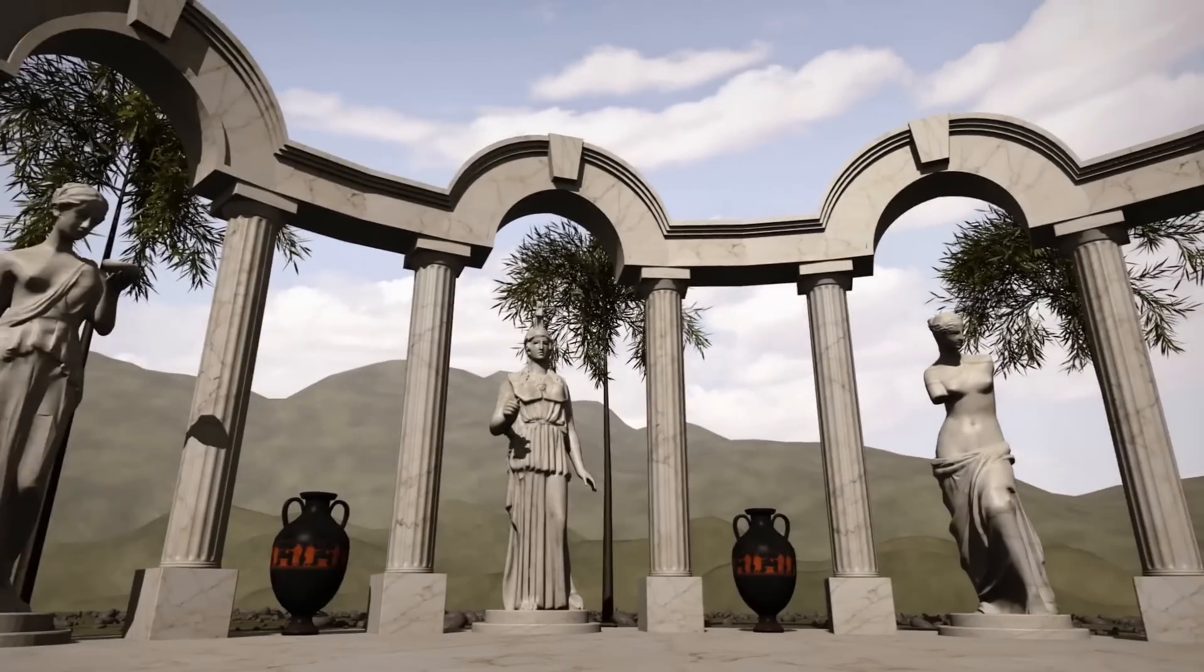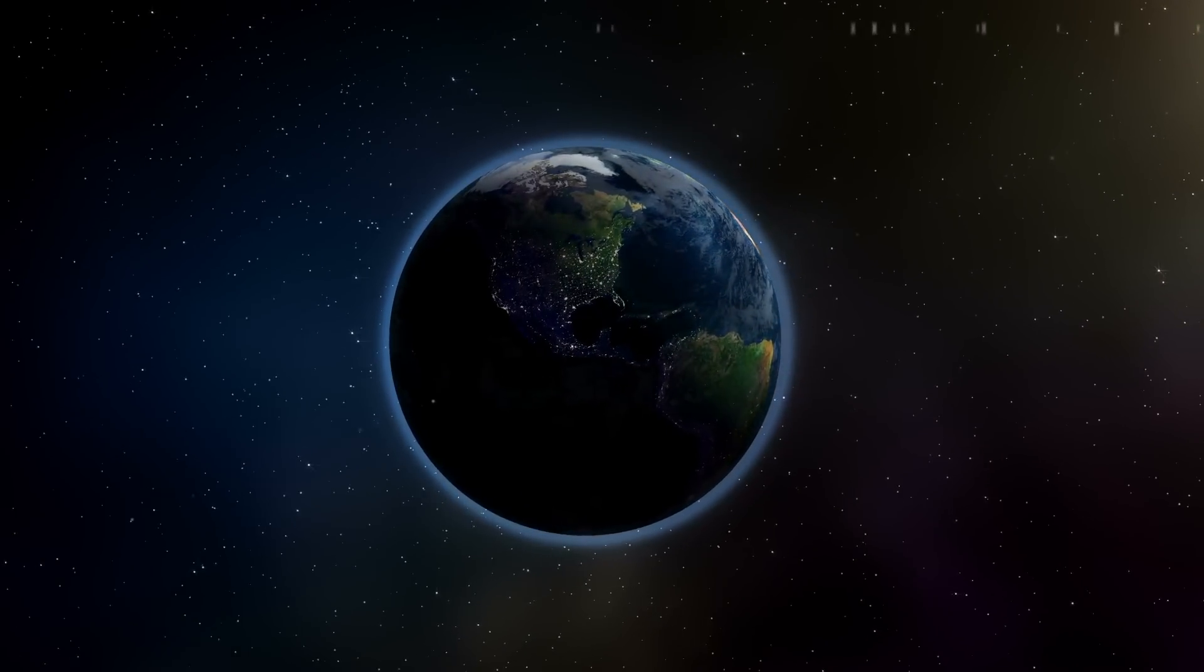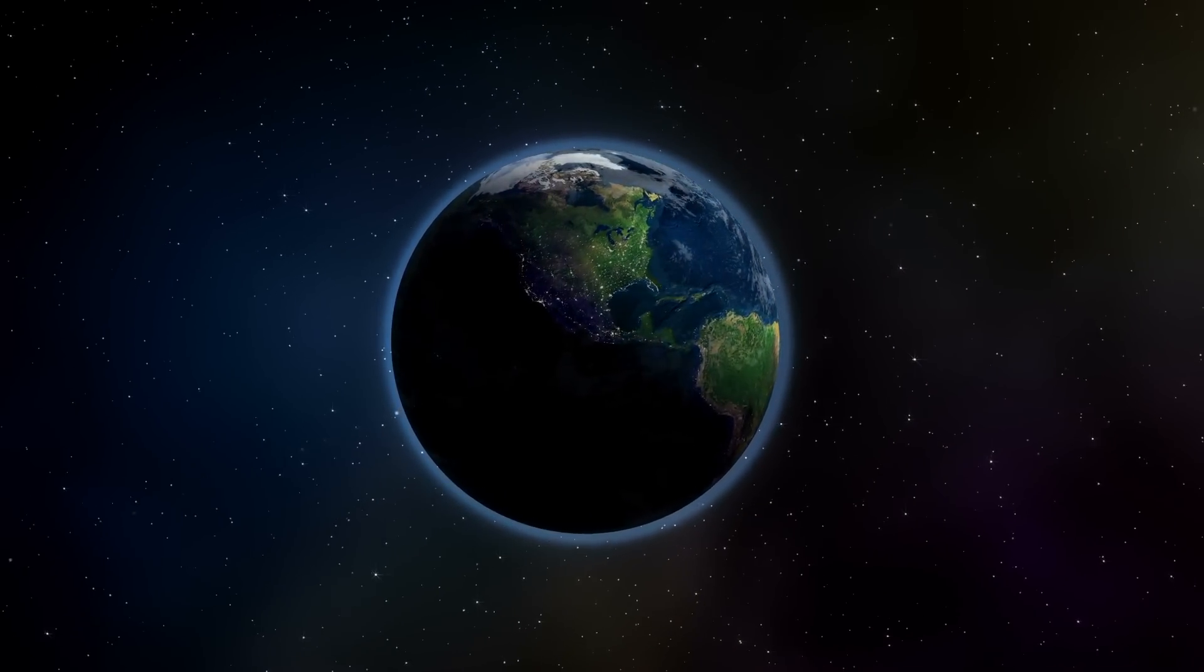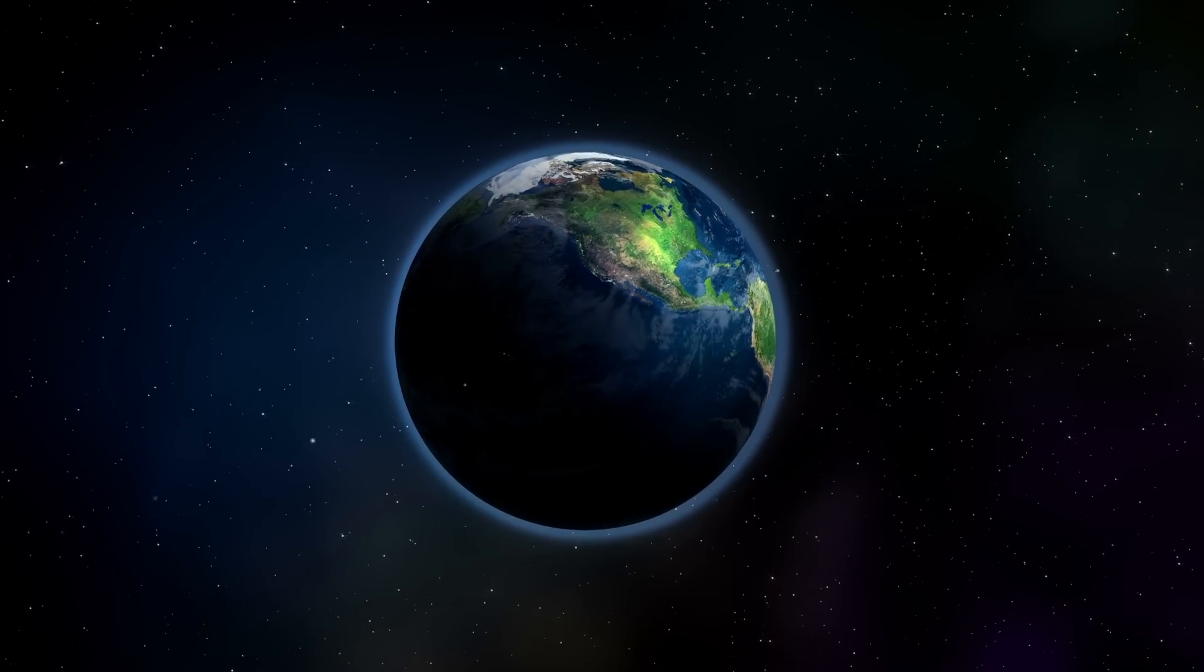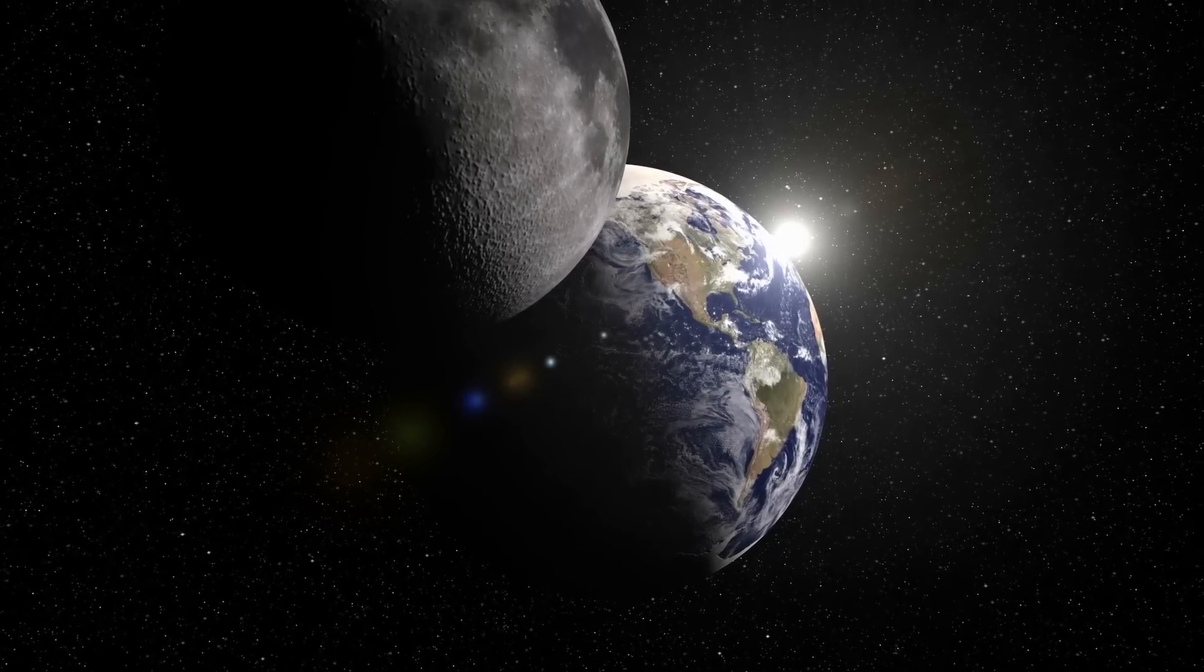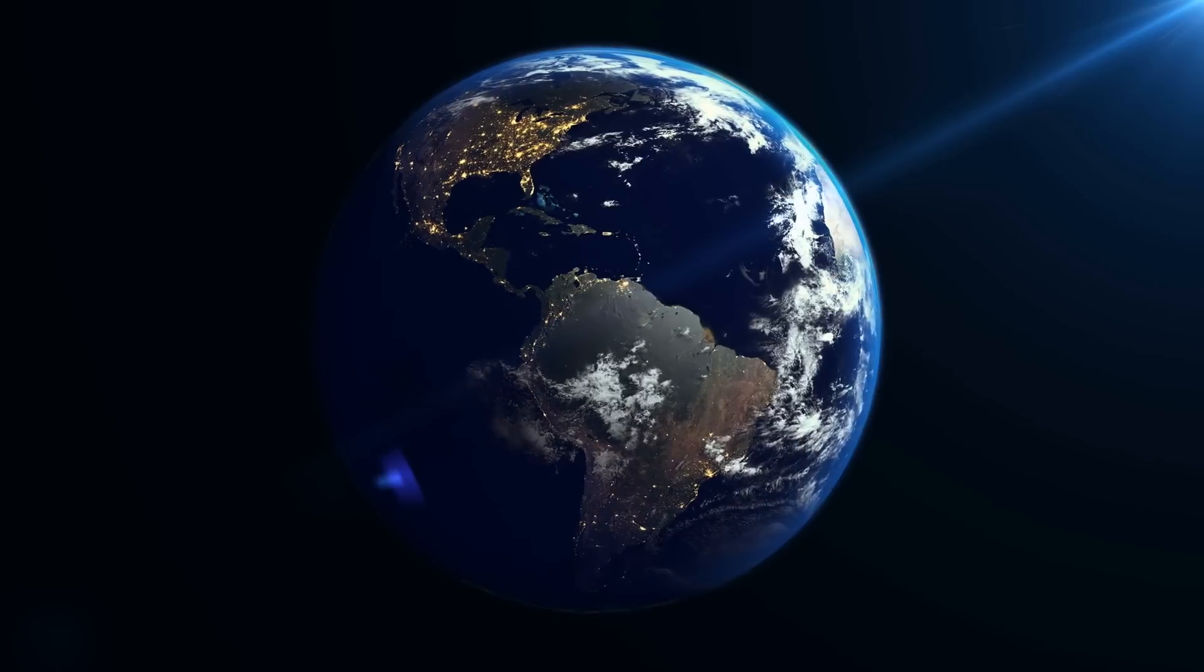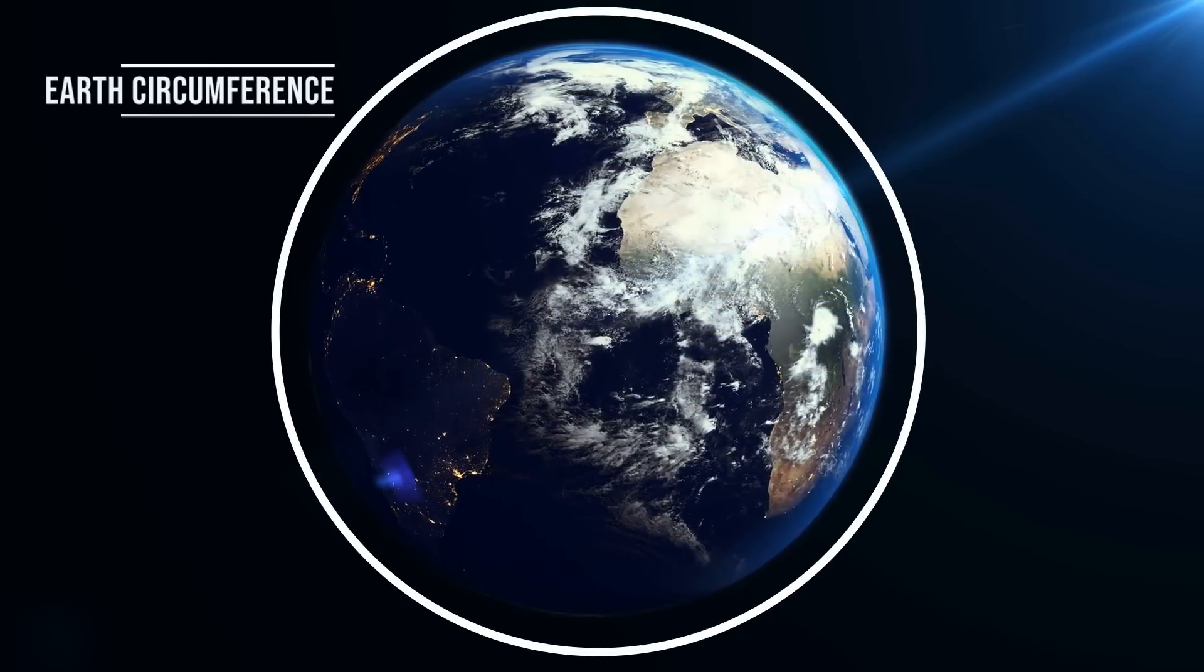As early as the 6th century BCE, ancient Greek philosophers documented evidence that Earth was a sphere. They noted that the night sky looked different when seen from various locations on Earth, hinting at our planet's curved surface. They also observed the round shadow of Earth on the moon during lunar eclipses.